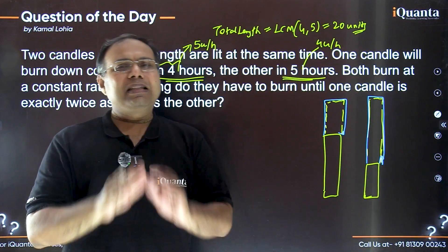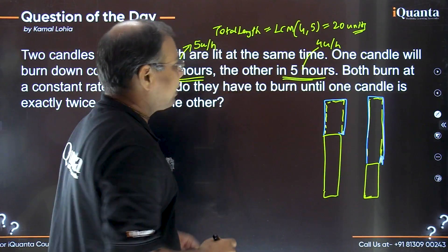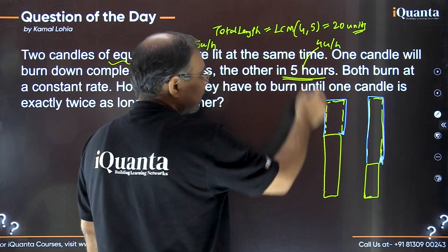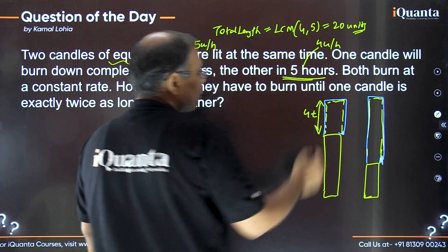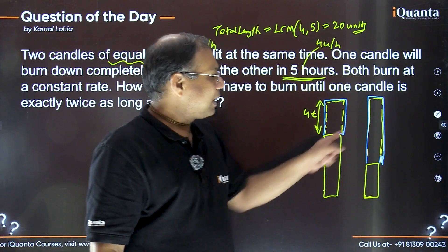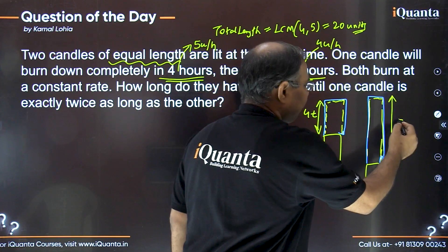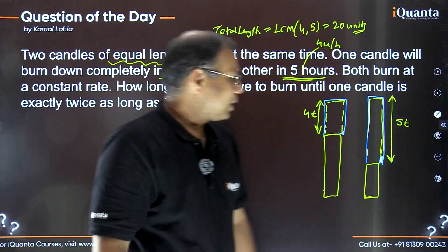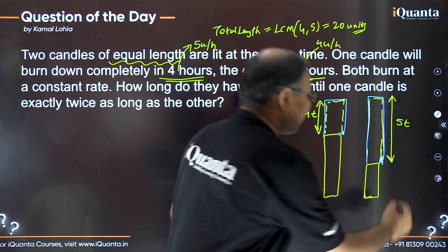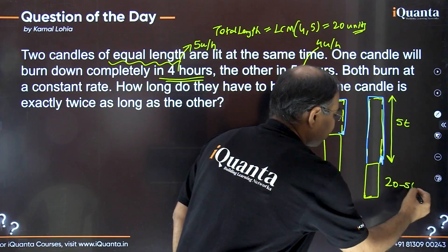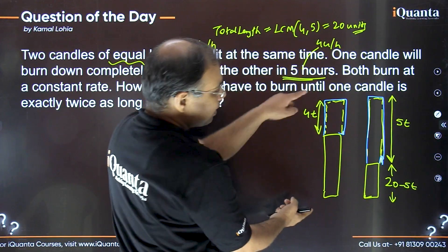Let's assume the required time is t hours. In time t, the faster candle (burning at 5 units/hr) has burned 5t units of length, and the slower candle (burning at 4 units/hr) has burned 4t units of length. So the remaining length of the first candle is 20 − 5t, and the remaining length of the second candle is 20 − 4t.